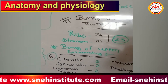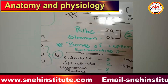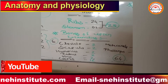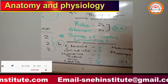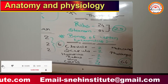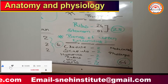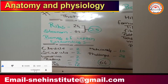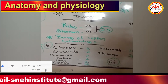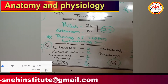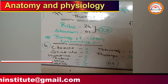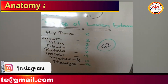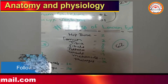Bones of the upper extremities: clavicle 2, scapula 2, humerus 2, radius 2, ulna 2, carpal 16, metacarpal 10, phalanges 28. Total number of bones of the upper extremities: 64.